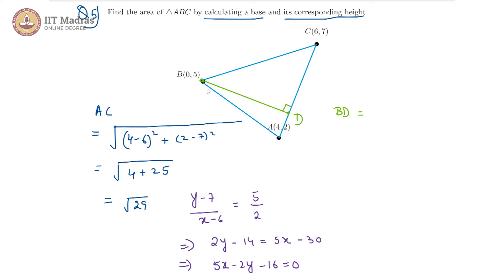And the distance of 0 comma 5 which is our B from this particular line. So this line is our 5x minus 2y minus 16 is equal to 0. So that distance can be calculated from the formula which is a x1 plus b y1 plus c divided by the root of a square plus b square. So here a is our 5, b is minus 2 and c is minus 16. So substituting and x1 y1 is our coordinates of b.